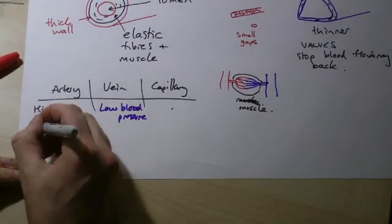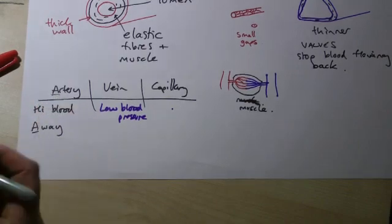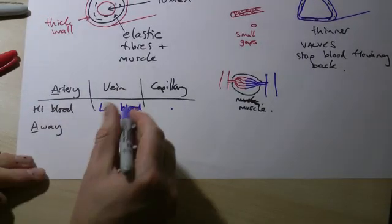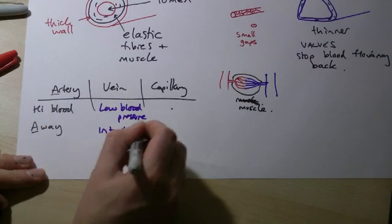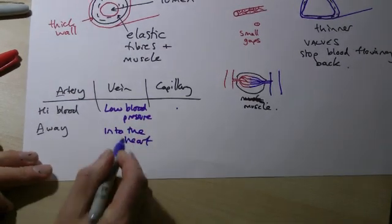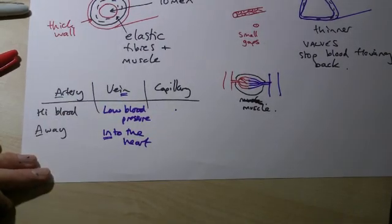The arteries carry blood away from the heart. A for artery, A for away. Veins carry blood either towards, or if you like, into the heart. I like thinking of into, because in is at the end of the vein.